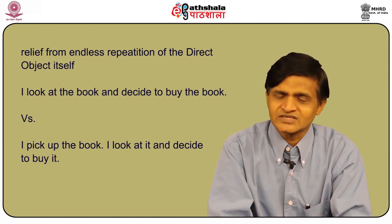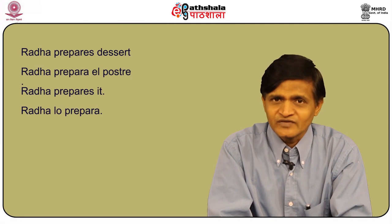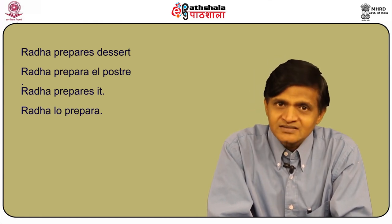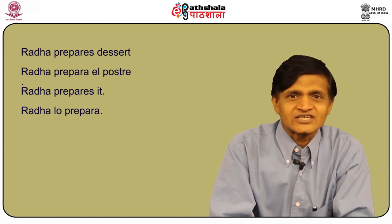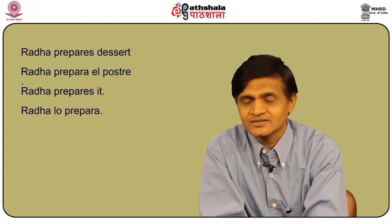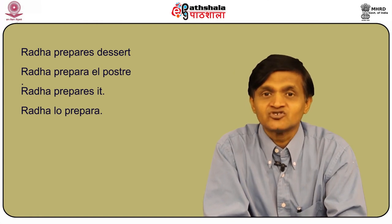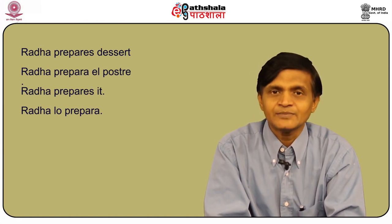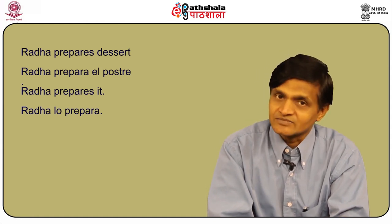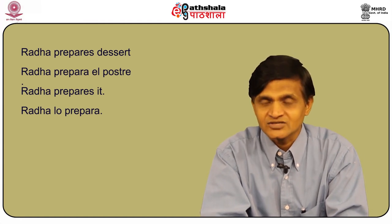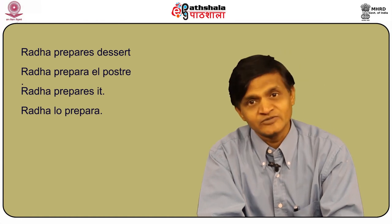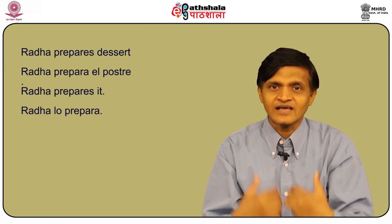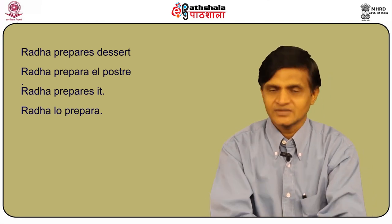Let us look at another example. Radha is the subject of the sentence — the person in charge of the verb. 'Prepares' is the verb and it is a transitive verb, as it transfers action to an object and so requires an object. 'Dessert' is the direct object — it receives the action of the verb. The dessert is what Radha prepares.